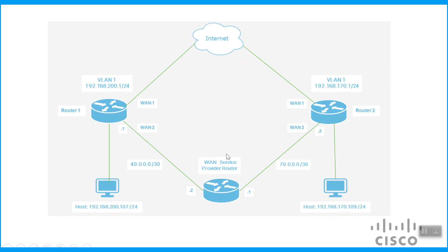We can see that both routers' WAN2s are connected to the WAN service provider router. In our example, we're going to divert the LAN traffic of VLAN1 from Router2 through the WAN2 link toward Router1's VLAN1 interface. We'll configure both routers and the WAN service provider router in this scenario.